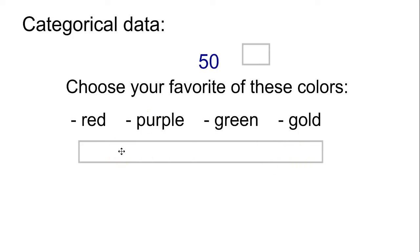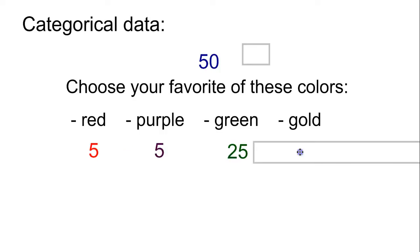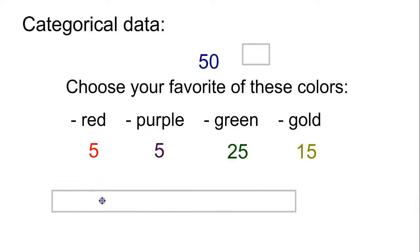If you go through your big list, go through your spreadsheet, count every one up, you're going to find that there are five people that chose red, five that chose purple, 25 that chose green, and 15 that chose gold.